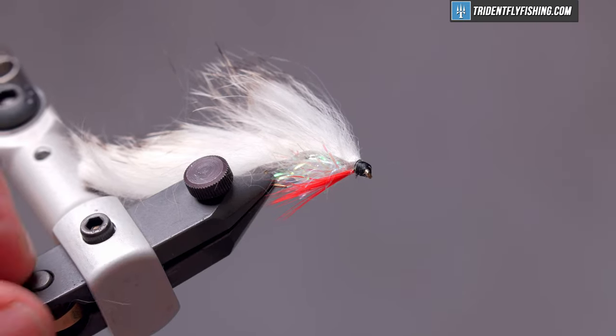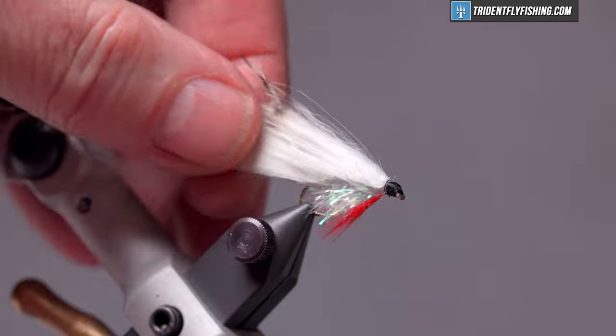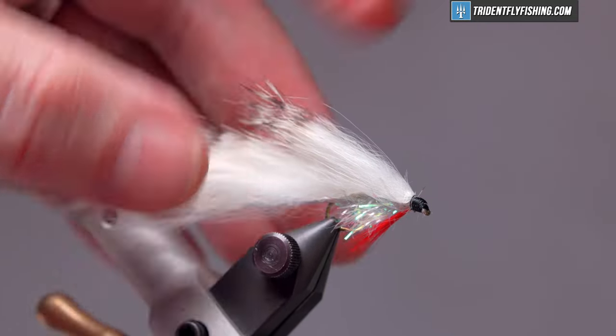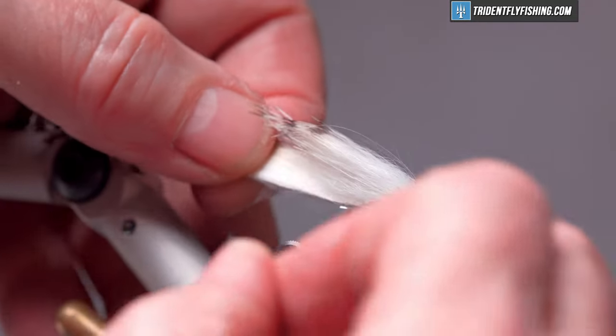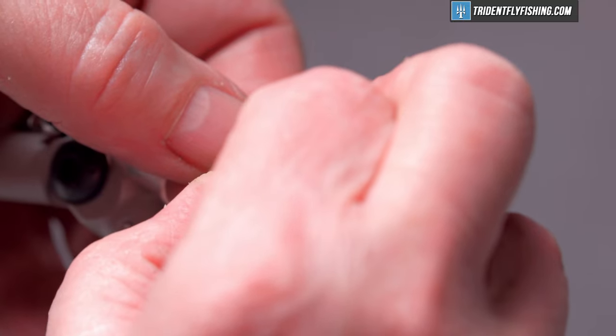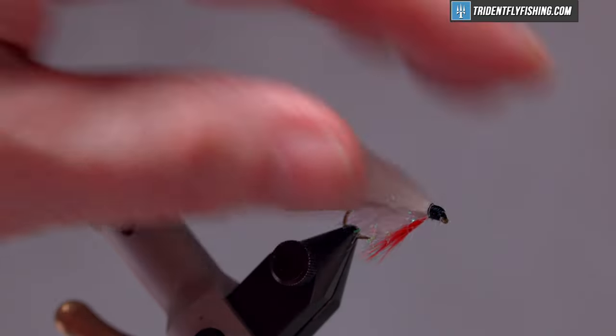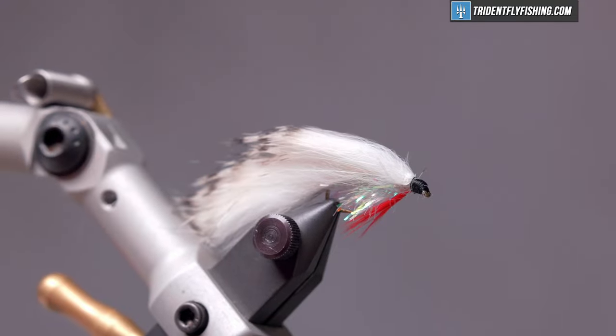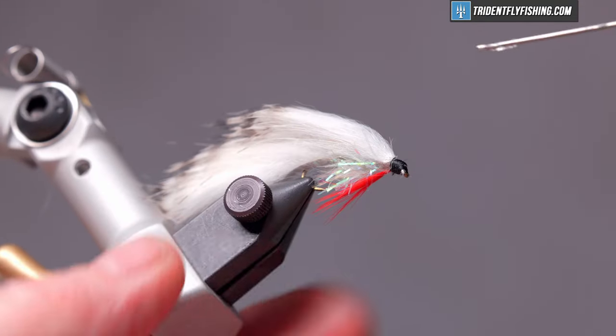We want to make this fly tail about as long as the shank of the hook. We'll come underneath that leather with a razor blade. That avoids cutting any of the fur. Gives you a nice long tapered tail. And a little head cement.